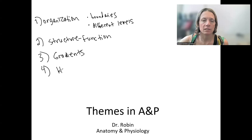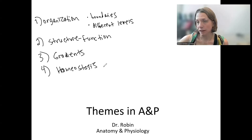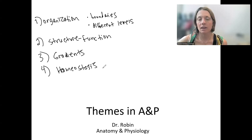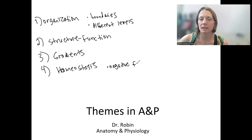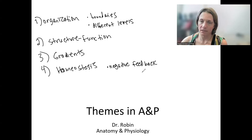Number four is homeostasis, which I've already mentioned a few times. This is maintaining a stable internal environment, consistent with life — some narrow range of functioning that allows life to happen. This uses negative feedback, a process that allows us to maintain homeostasis. We will also talk about positive feedback, but it is not directly related to maintaining homeostasis, so it's kind of a separate thing.